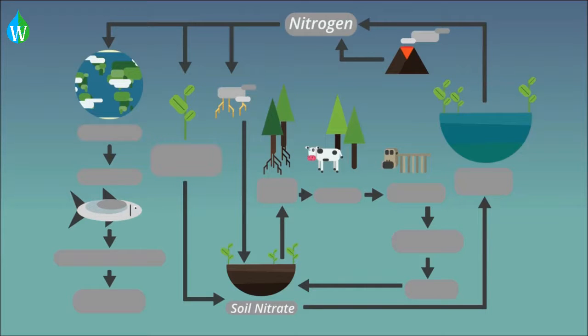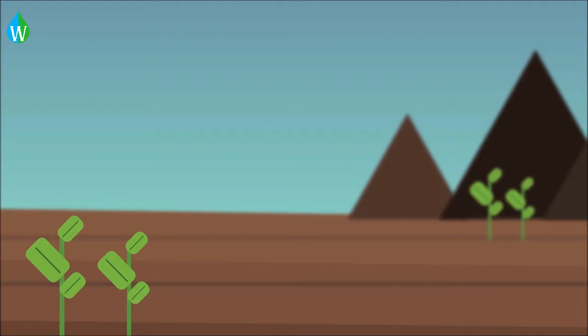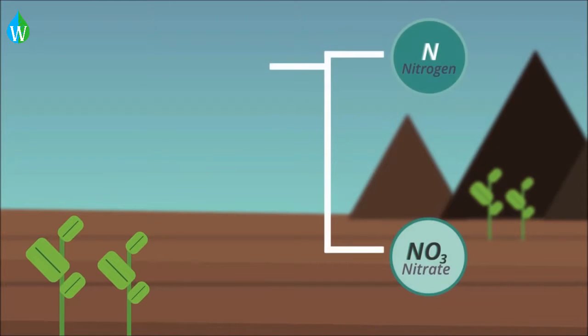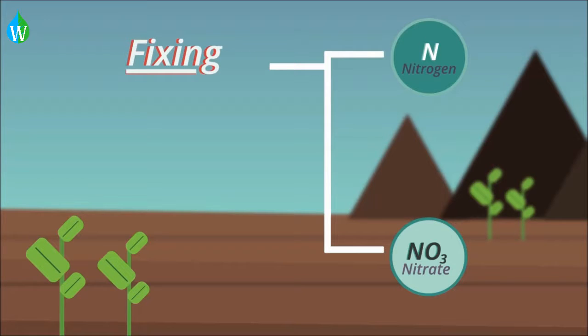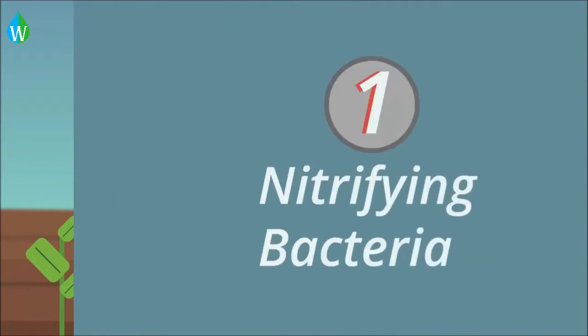Nitrogen is continually cycled through the air, soil and living things. The process of nitrogen in the atmosphere being turned into nitrogen in the soils is called fixing. Here are four different ways in which nitrogen fixing occurs naturally.